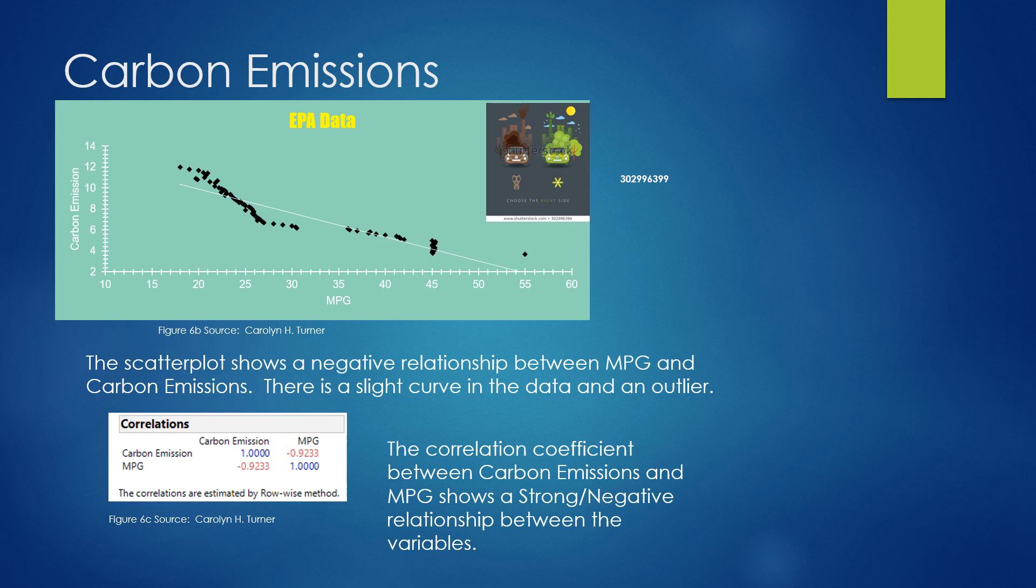In the next example, we'll look at carbon emission data based on the miles per gallon different models of cars get. The EPA would like to show what type of relationship is seen here. When we look at the graph or the scatter plot, we see there's a negative slope. So as the miles per gallon increase for the cars, the carbon emissions decrease. We also notice in the plot that there's probably a severe outlier. Maybe that was a Toyota Prius that got 55 miles per gallon. Then when we look at the correlation matrix, the value of negative 0.9233 would indicate there is a strong negative relationship between miles per gallon and carbon emissions.